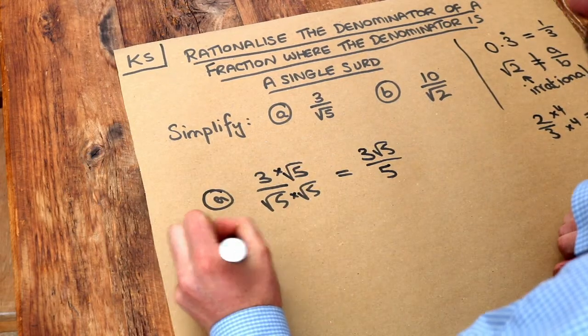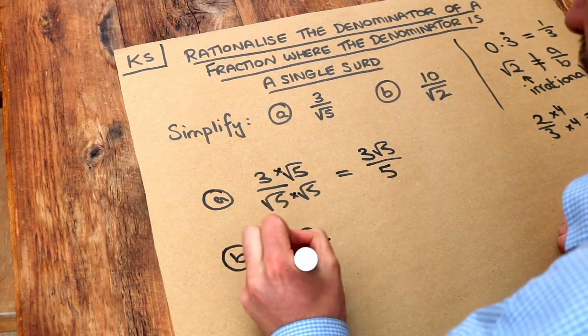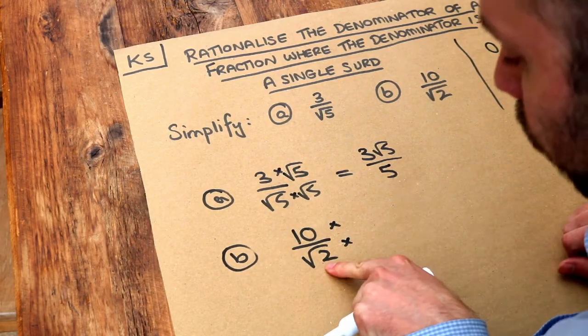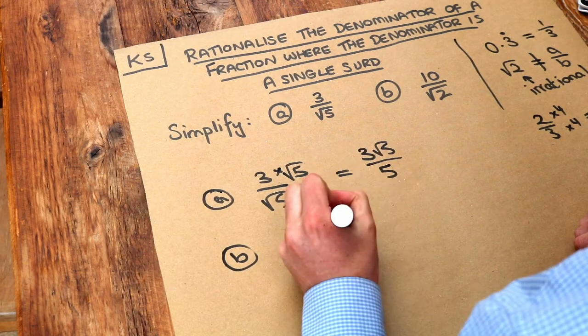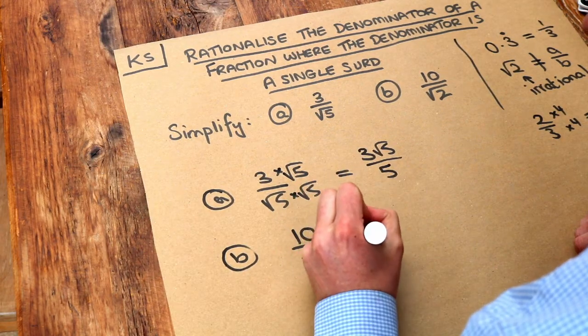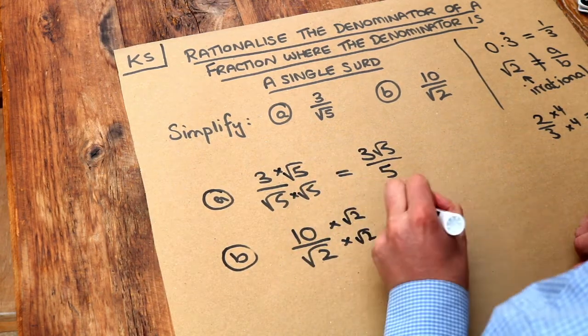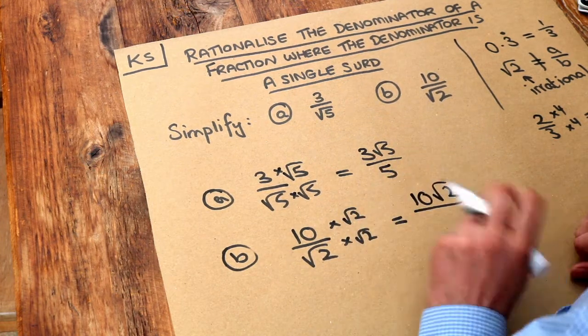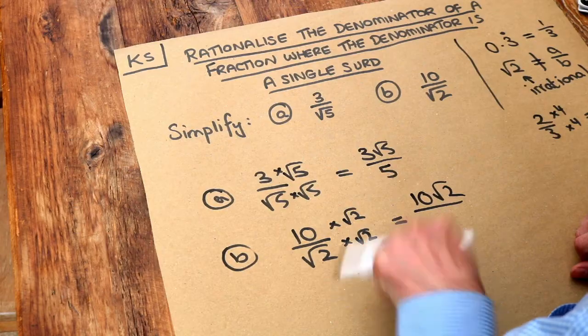What about the second one? In this one we're going to be able to simplify. So we just multiply top and bottom of that fraction by whatever we have at the bottom. So we've got root 2 here, so we multiply top and bottom by root 2. Now the top, 10 times root 2, is just 10 root 2, and then the bottom, root 2 times root 2, is just 2.